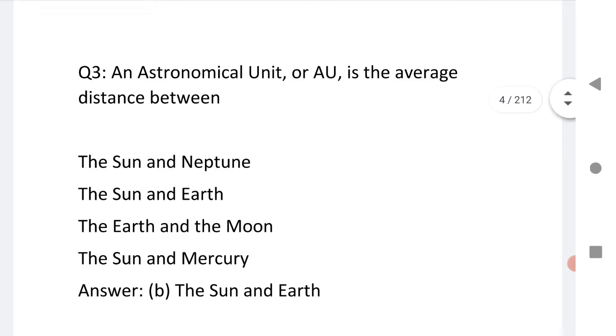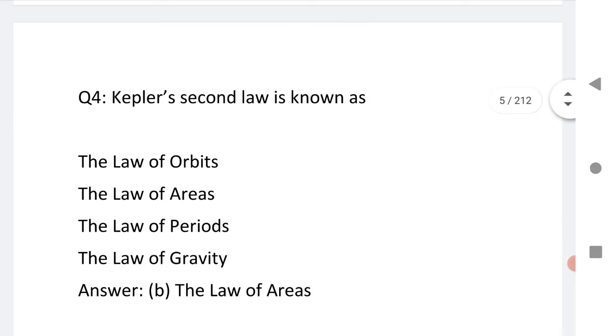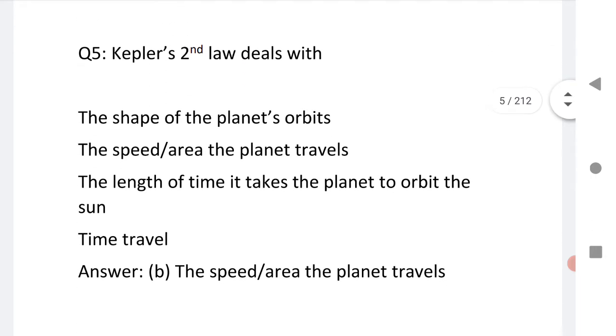Next: the astronomical unit or AU is an average distance between the sun and the earth. Next is fourth question.